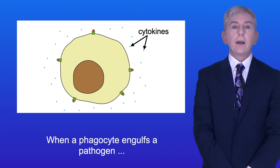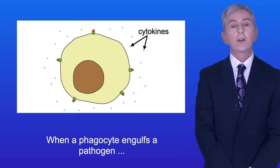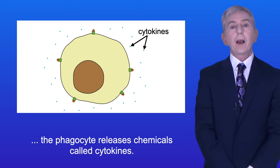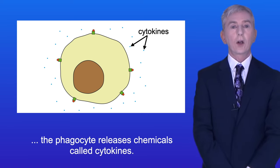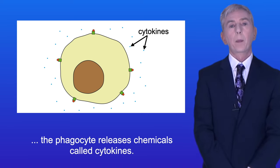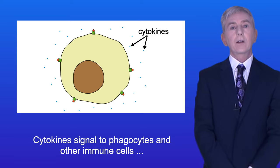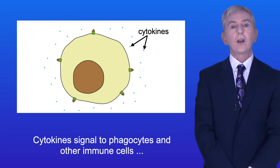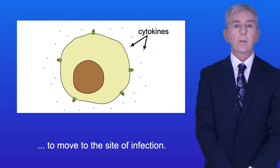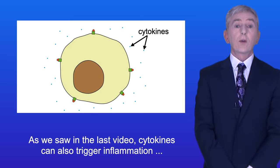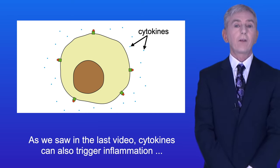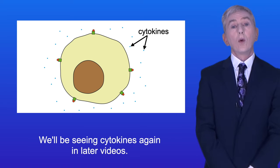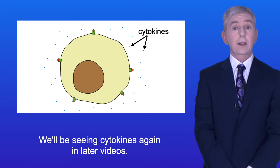When a phagocyte engulfs a pathogen the phagocyte releases chemicals called cytokines. Cytokines signal to phagocytes and other immune cells to move to the site of infection. As we saw in the last video, cytokines can also trigger inflammation and a fever. We'll be seeing cytokines again in later videos.